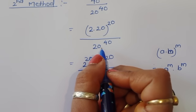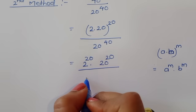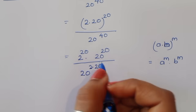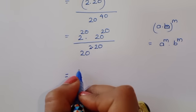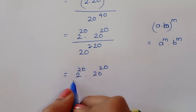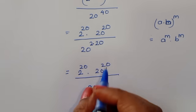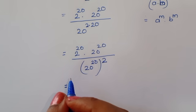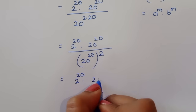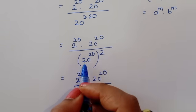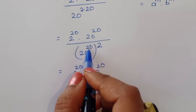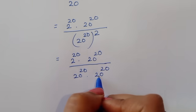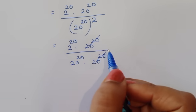The denominator is 20 power 40, which we write as 20 power 20 times 20 power 20 — that is (20 power 20) squared. So we have 2 power 20 times 20 power 20 divided by 20 power 20 times 20 power 20. We cancel the 20 power 20 terms, leaving 2 power 20 divided by 20 power 20.